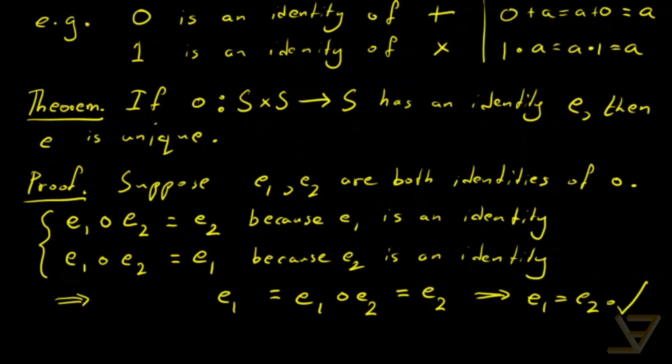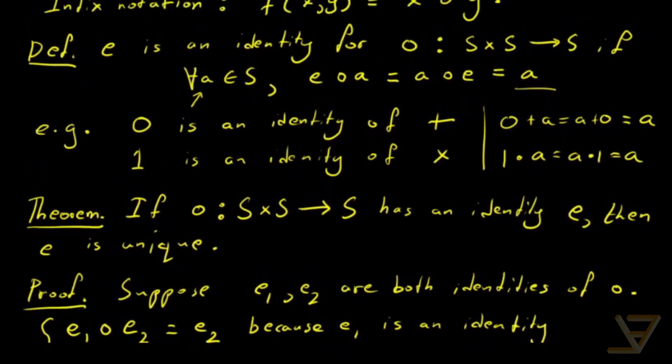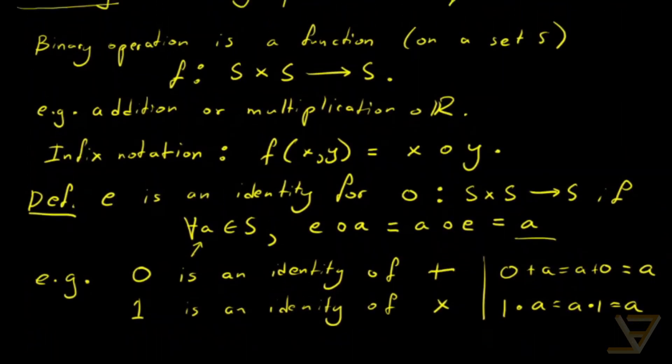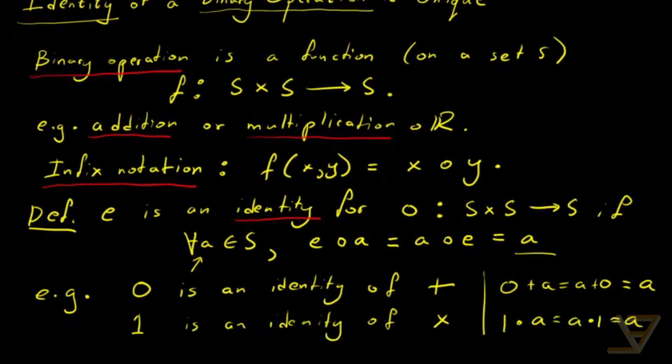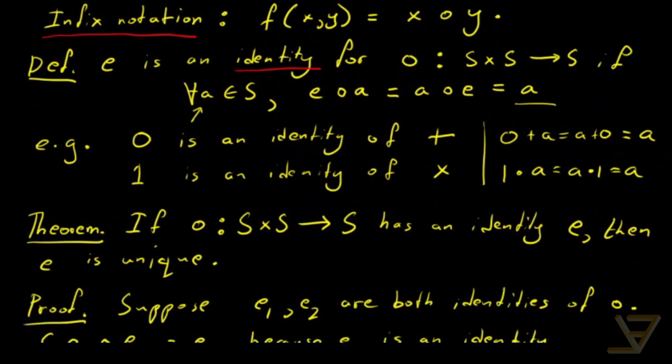Let's do a quick recap. We defined what a binary operation is. We gave the examples of addition and multiplication. We made note of infix notation. We defined what an identity on a binary operation is.